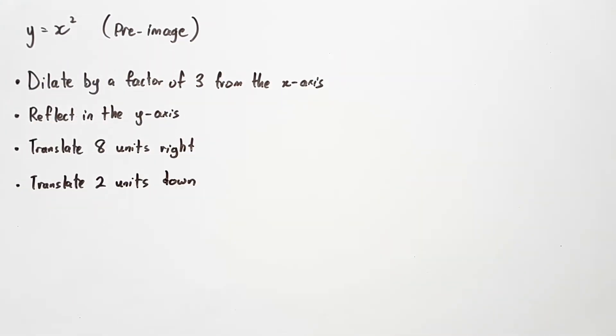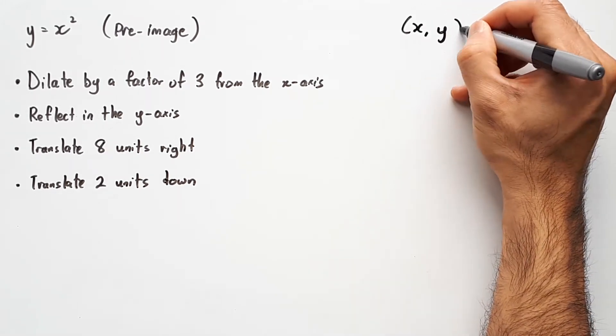In our first question, we're given a very basic pre-image equation, y equals x squared, and we're asked to transform this using the following sequence. The first step is to write out a coordinate which represents our pre-image equation, and the most generic thing we can write is (x, y).